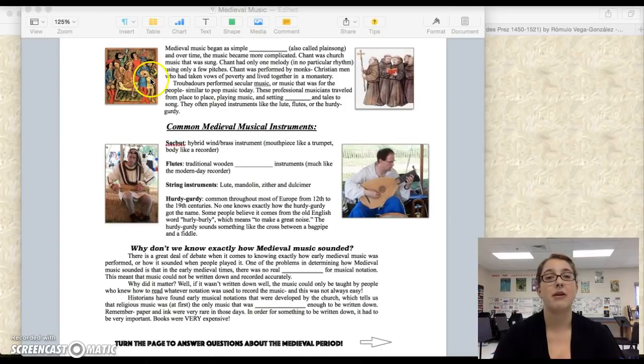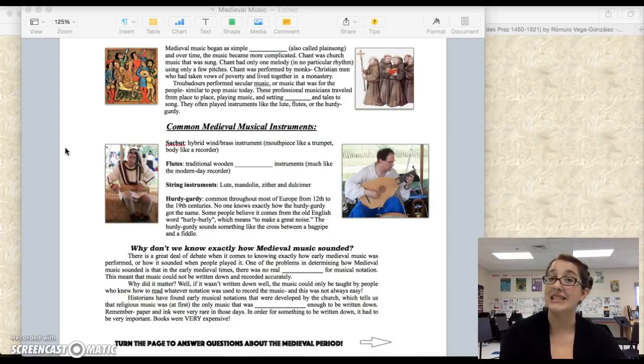So now let's go down to the second paragraph. Medieval music began as simple chant, C-H-A-N-T, chant. It was also called plain song. And over time, that music became more complicated. So originally, it was really plain, hence plain song, and it got more complicated. So chant was church music that was sung. It had only one melody and no particular rhythm, using only a few pitches. It was performed by monks who were Christian men that had taken vows of poverty and lived together in a monastery.